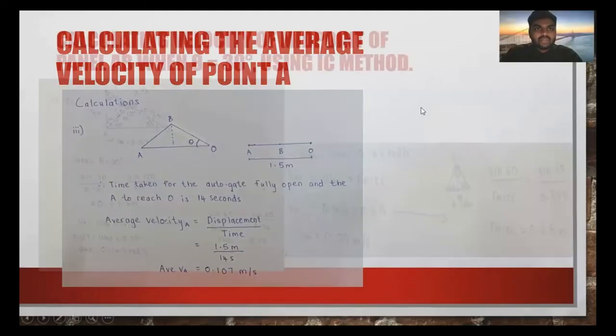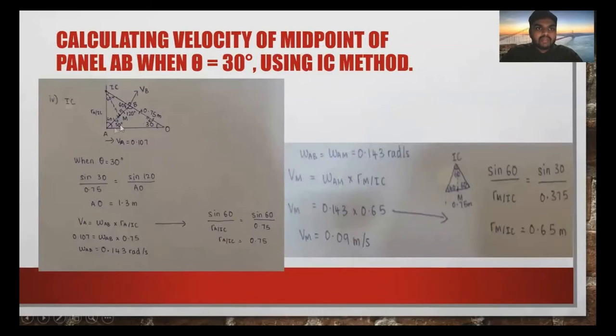From the average velocity, we have to find the velocity of M, which is the midpoint of panel AB, using IC when theta is 30 degrees. The IC is the perpendicular line of velocity A and velocity B. Using the formula, we can find the omega, which is 0.143 radians per second. A, B, and AM share the same omega. So we can find VM, which is 0.09 meters per second. The omega rotates anticlockwise.